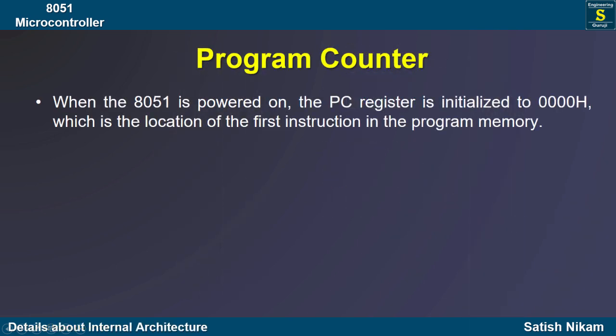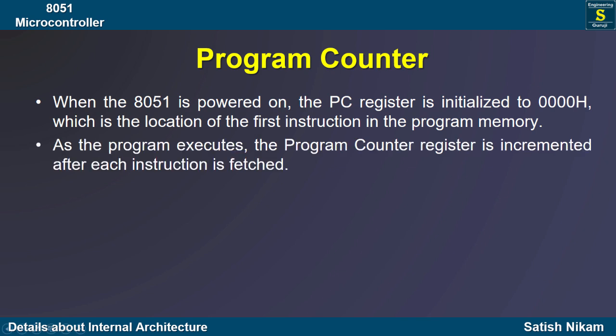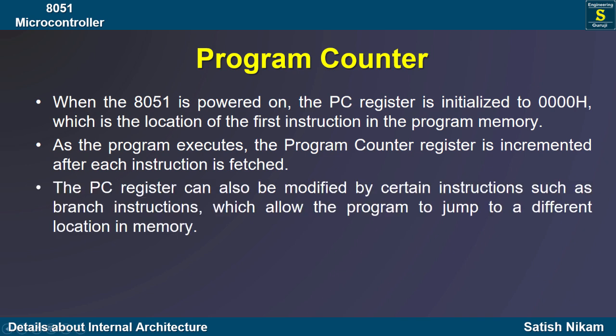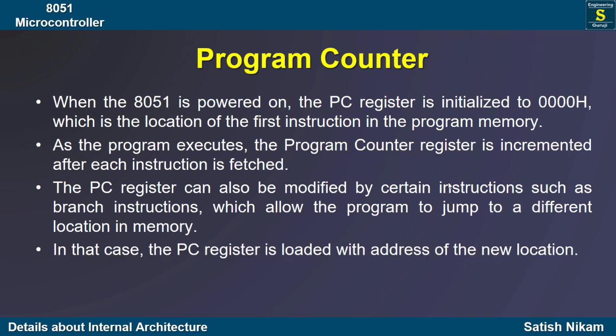When the 8051 is powered on, the PC register is initialized to 00H memory location, which is the location of the first instruction in the program memory. As the program executes, the program counter register is incremented after each instruction is fetched, causing it to point to the next instruction in memory. The PC register can also be modified by certain instructions such as branch instructions, which allow the program to jump to different locations in memory.